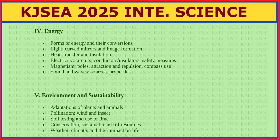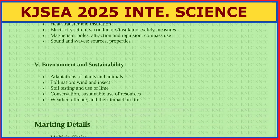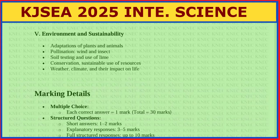In Sound and Waves, we have sources and properties. Then under Environment and Sustainability, topics include adaptations of plants and animals, pollination — wind and insect pollinated flowers — soil testing and use of lime, conservation and sustainable use of resources, weather, climate and their impact on life.